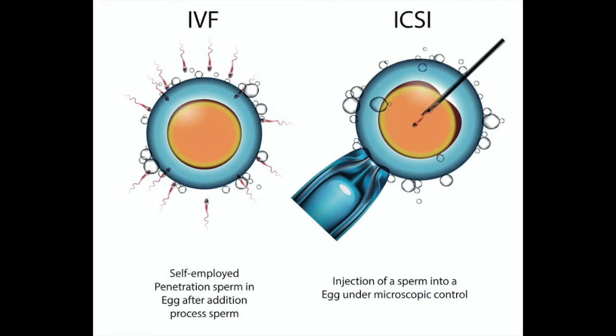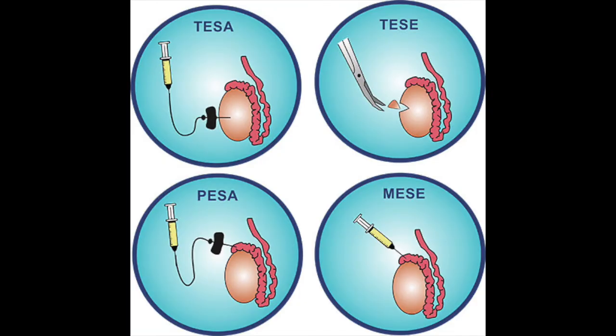In moderate to severe forms of male infertility with very low sperm count, assisted reproductive technology in the form of in vitro fertilization and especially intracytoplasmic sperm injection (ICSI) is indicated. In ICSI, one sperm is injected into the egg, kept in an incubator for fertilization, and then the embryo is put back into the uterus. In cases of azoospermia, both obstructive and certain forms of non-obstructive, sperms can be retrieved surgically from the testes or epididymis using microsurgical techniques and then used for ICSI.